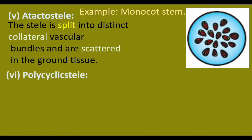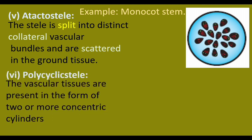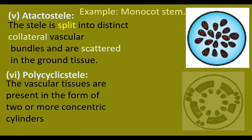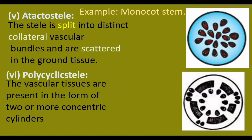Polycyclic stele: the vascular tissues are present in the form of two or more concentric cylinders — one inside and another outside. Two or more concentric cylinders of vascular bundles are formed. Example: Pteridium.